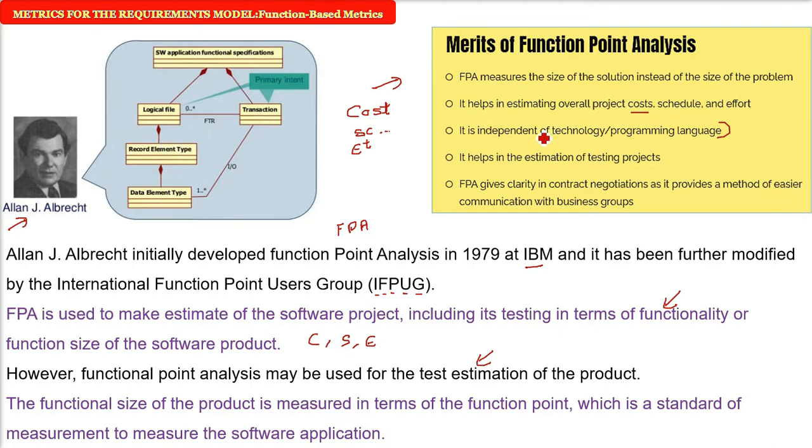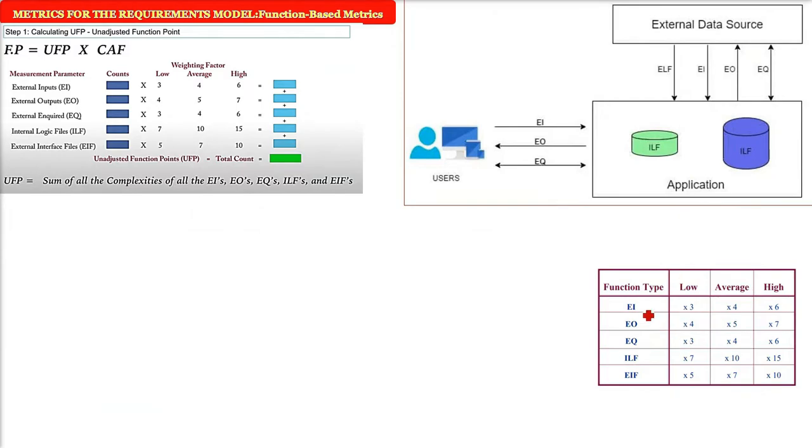So it helps in estimation of testing projects also and since you have all these numbers now you can have a better idea to discuss it with your stakeholders. Now there are different parts you see here and you will be able to understand in a short while. How does this function-based metric or function point analysis work? These are the five measurement parameters which we also call as the information domain values.